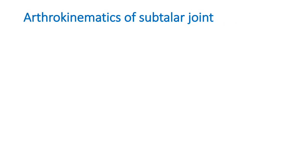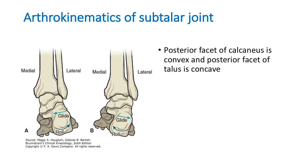The subtalar joint is formed between the talus and the calcaneum, by attachment of the anterior, middle, and posterior facets of the talus and calcaneum. The posterior facet comprises 70% of the joint. The posterior facet of the calcaneum is convex whereas the posterior facet of the talus is concave.